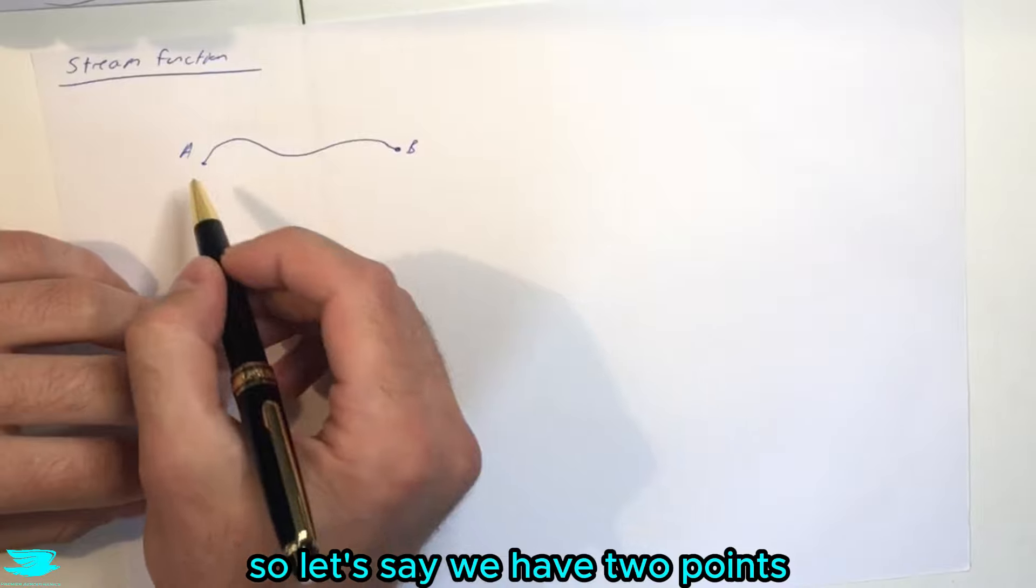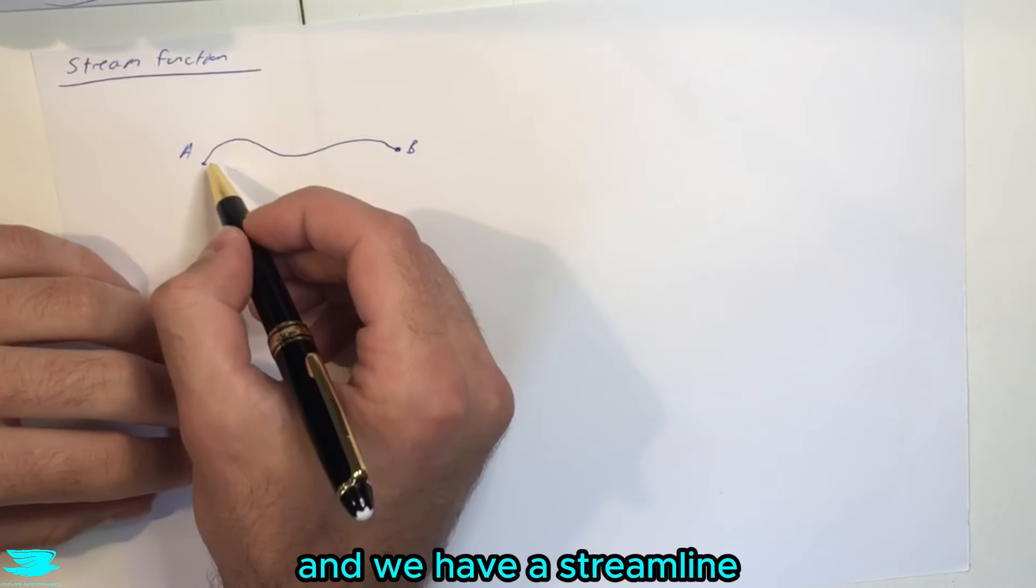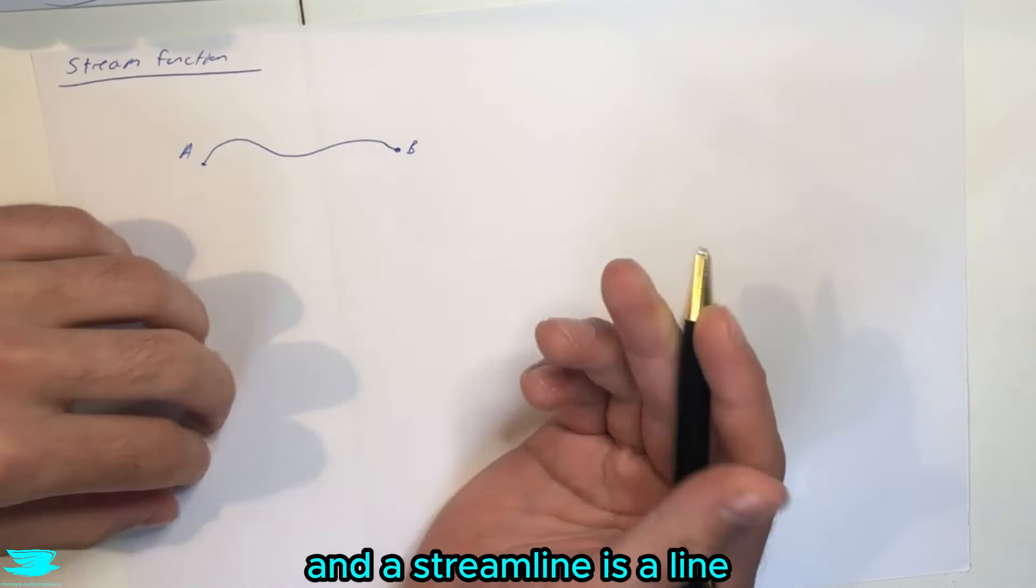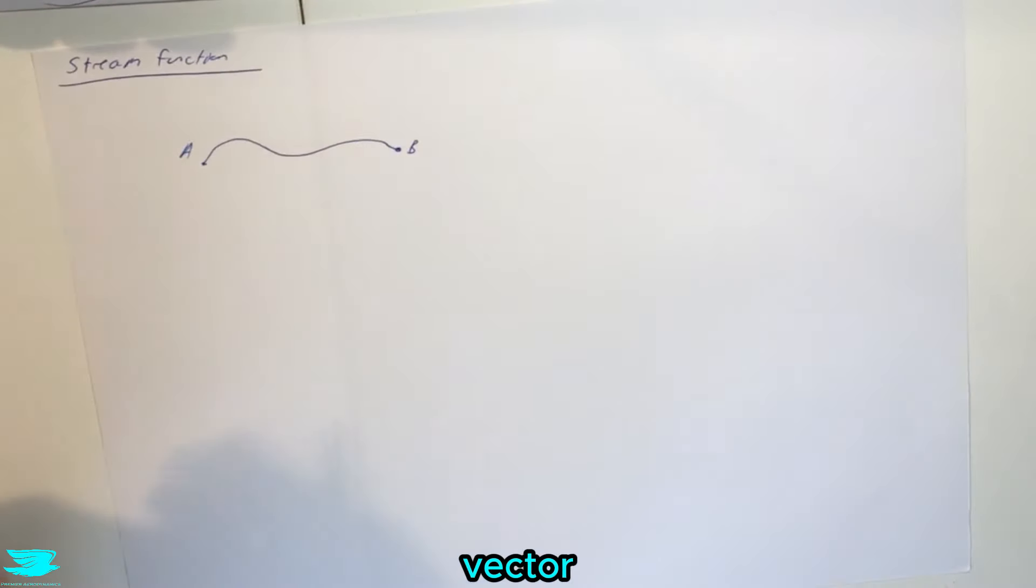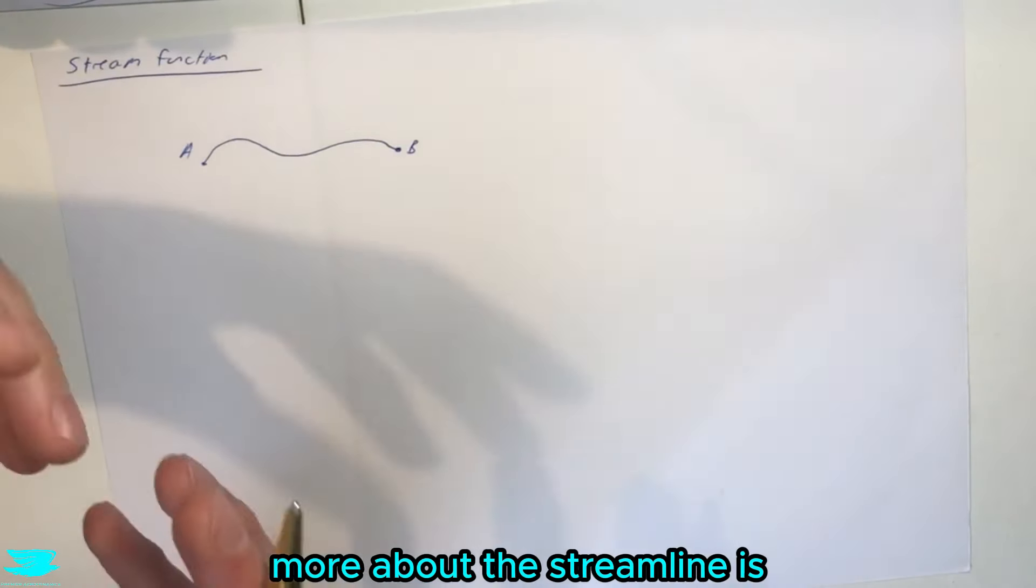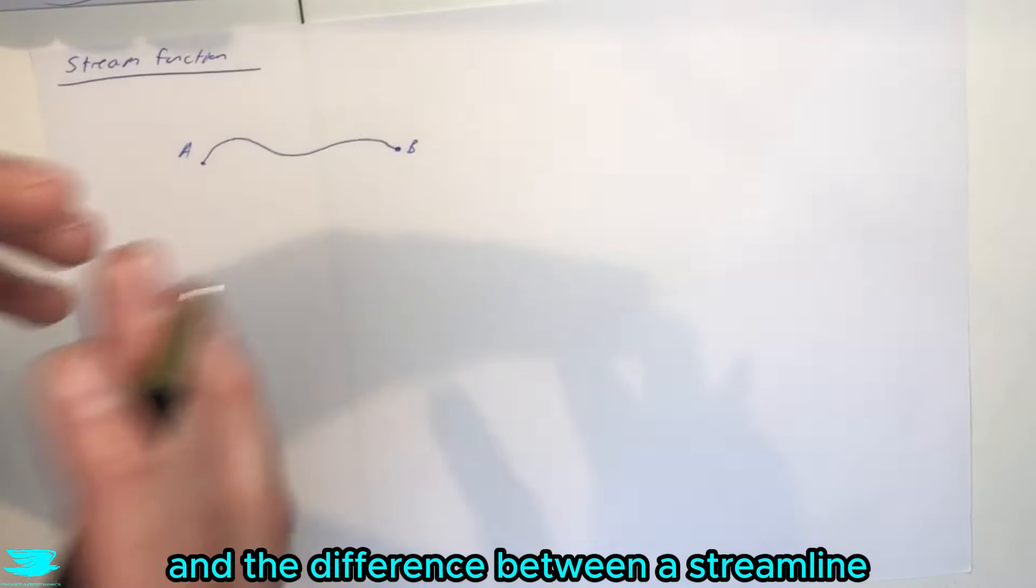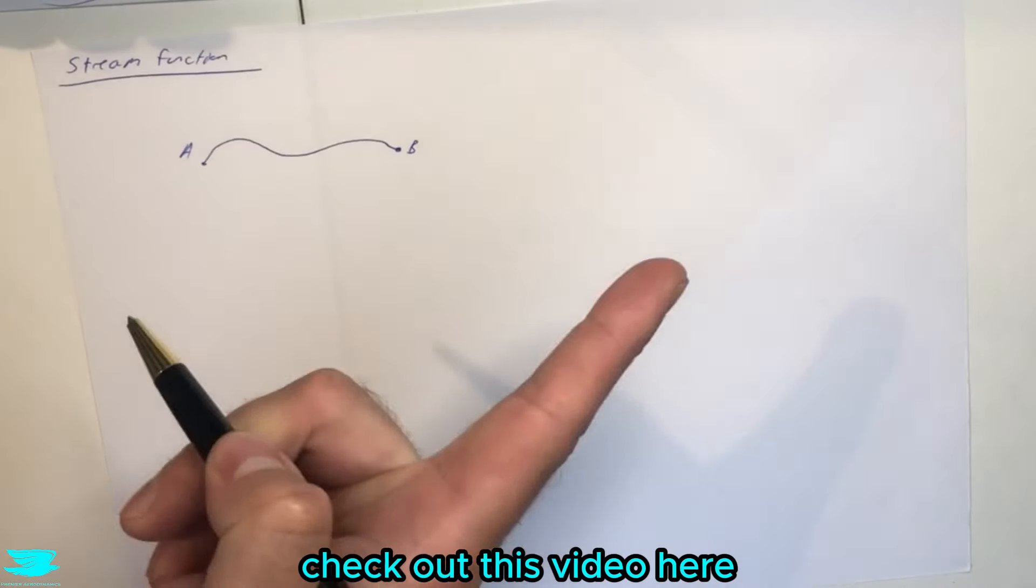So let's say we have two points, point A and point B, and we have a streamline going between the two. A streamline is a line that is just always tangential to the local velocity vector. If you want to know more about what a streamline is and the difference between a streamline, streak line, and path line, check out this video here.